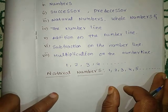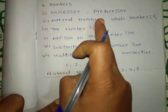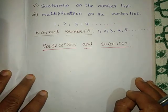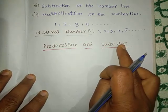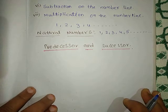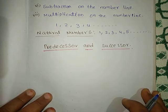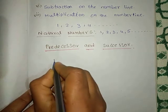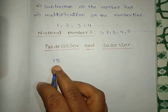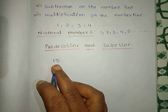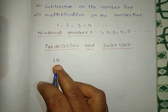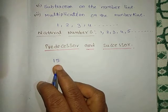Now let us see the next topic: predecessor and successor. Let us look at some examples. Let me take a number — 15. My number is 15. Now I want the successor of the number 15, and I want the predecessor of the number 15. So what will be the successor of 15?